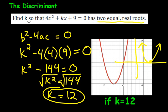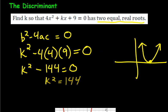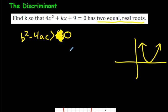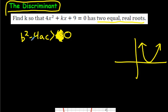There are other variations of this kind of question. If it asked for no real roots, you'd set up the same equation but use b² - 4ac < 0. If it asked for two different real roots, you'd use b² - 4ac > 0. Hopefully you're comfortable with this idea called the discriminant and you're able to use it to your advantage. Good luck!